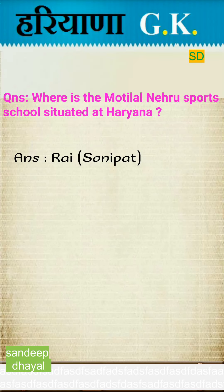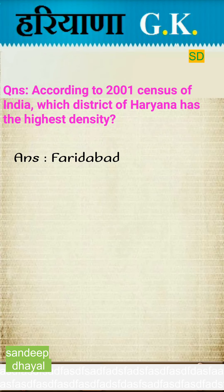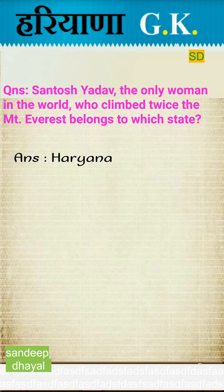Welcome friends, today we will do Haryana GK, so let's start. Question: Where is the Motilal Nehru Sports School situated? Answer: Rai, Sonipat. According to the 2001 census of India, which district of Haryana has the highest density? Faridabad. Santos Yadav, the only woman in the world who climbed Mount Everest twice, belongs to which state? Haryana.